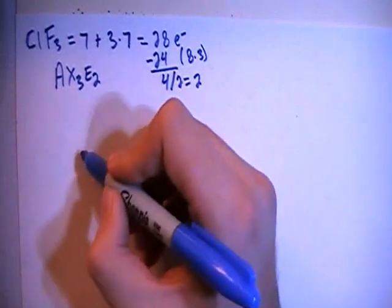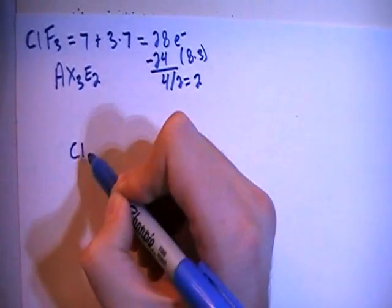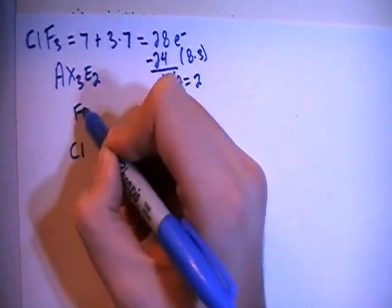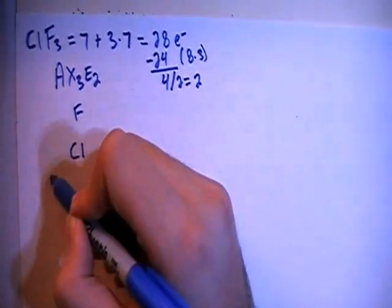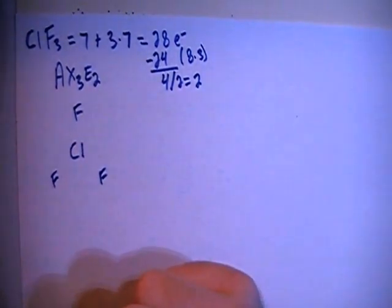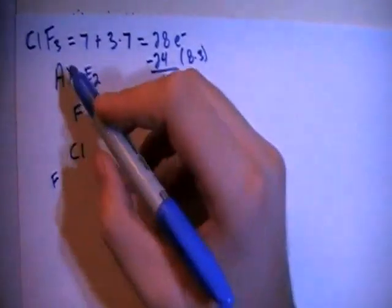So let's go ahead and draw this structure. So we have the chlorine in the center surrounded by the 3 fluorines.